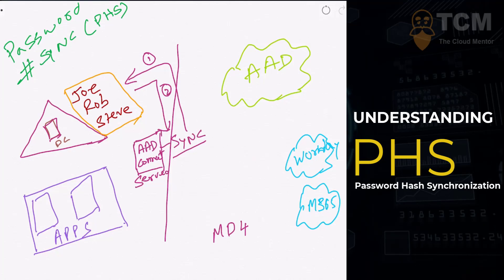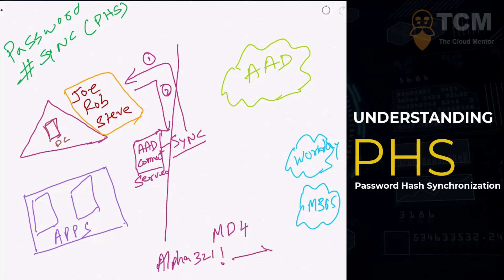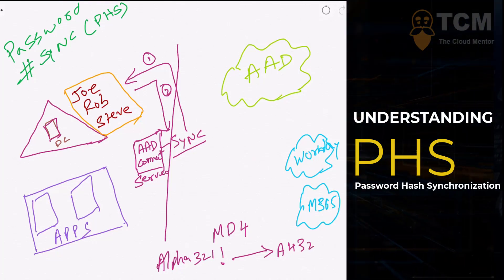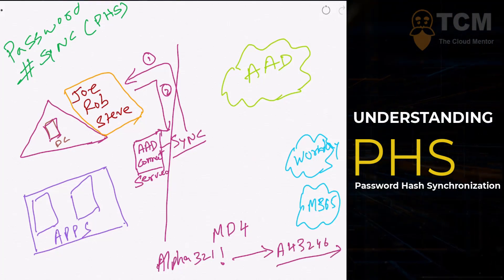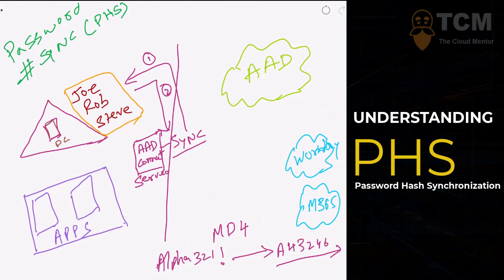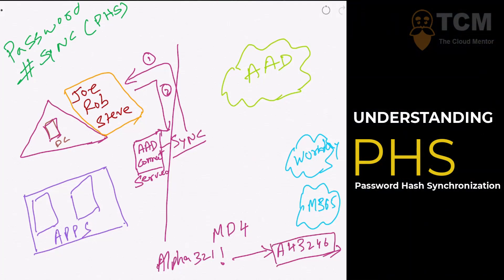This payload is in a particular hashed format called MD4. MD4 is a hashing algorithm — what it means is that if your password is something like 'alpha321!', it converts that to an alphanumeric string, something like '46...' followed by gibberish values. That MD4 value is what gets sent to the Azure AD Connect server.